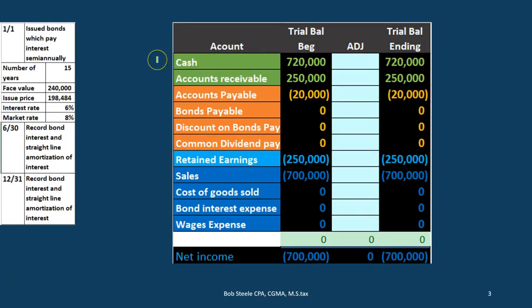We're going to look at this in context of a problem with information on the left-hand side. We'll look at a trial balance — a simplified one with just a couple of assets: cash and accounts receivable. We have liabilities including accounts payable, bonds payable, discount on bonds, and common dividend payable. The equity section has only retained earnings at this time, and the income statement shows sales income and expenses — just income of 700 at this point, not a loss.